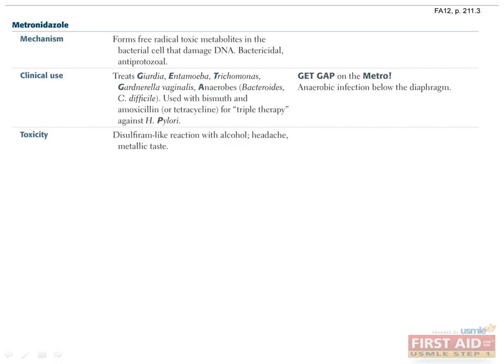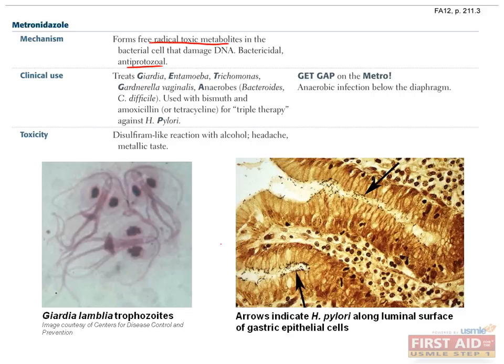Metronidazole is a bactericidal antibiotic that induces free radical toxic metabolites, damaging bacterial DNA. It also has antiprotozoal activity. Metronidazole is used to treat infections from Giardia, Entamoeba, Trichomonas, Gardnerella vaginalis, and anaerobes. Also important is the treatment of H. pylori — remember the mnemonic GET GAP on the Metro. Metronidazole may induce a disulfiram-like reaction, which is nausea that occurs with concurrent alcohol use.